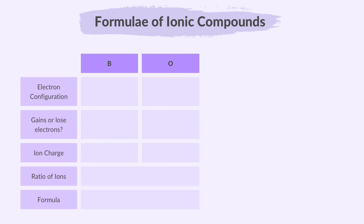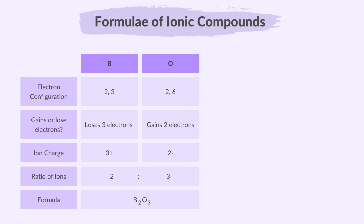Let's consider boron oxide. Boron, B, typically forms a +3 cation, so it has a charge of +3. Oxygen, O, typically forms a −2 anion, so it has a charge of −2. To create a neutral ionic compound, we need to ensure that the total positive charge from the boron ions balances the total negative charge from the oxygen ions. The ratio required for this is 2 boron ions to 3 oxygen ions, resulting in a 2 to 3 ratio. So for boron oxide, B2O3, the ratio of ions is 2 boron ions to 3 oxygen ions to balance the charges and create a neutral compound.